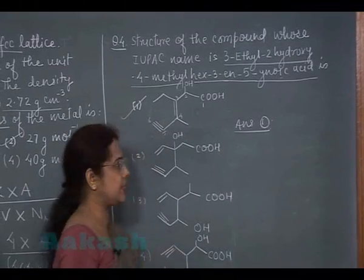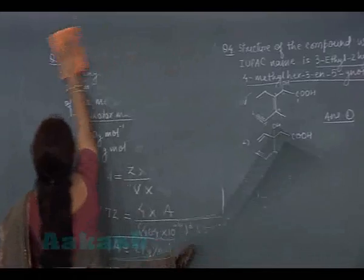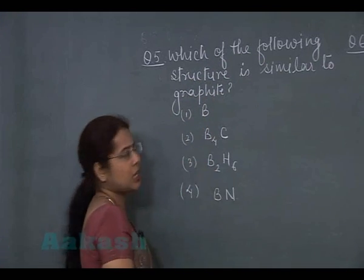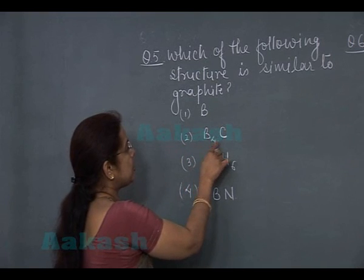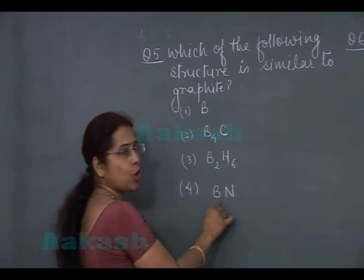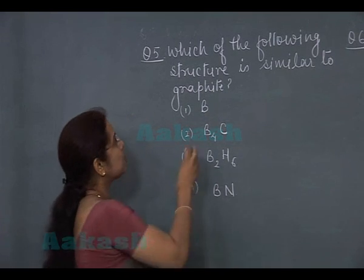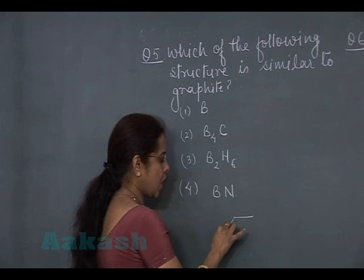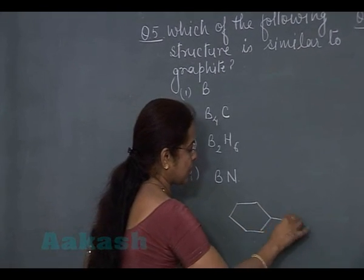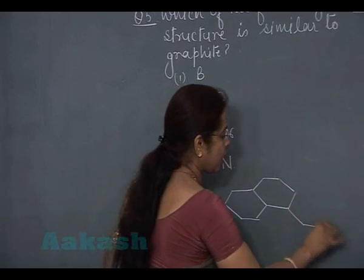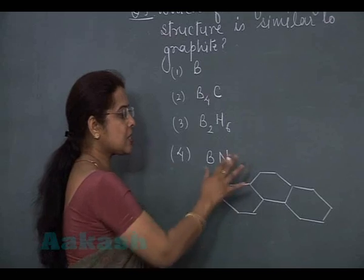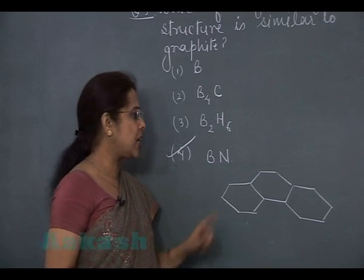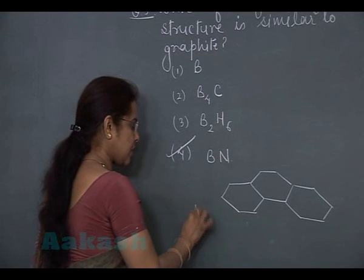Question number 5: which of the following structures is similar to graphite? Options are boron (B), B4C, B2H6, and BN (boron nitride). Graphite has a hexagonal planar ring structure forming sheet-like layers. The similar structure is shown by boron nitride, which is why it is known as inorganic graphite. The answer is option 4.